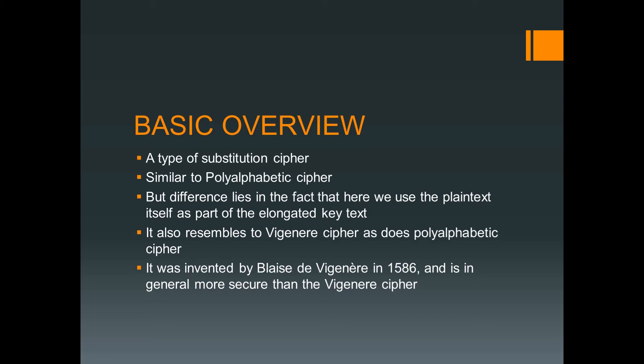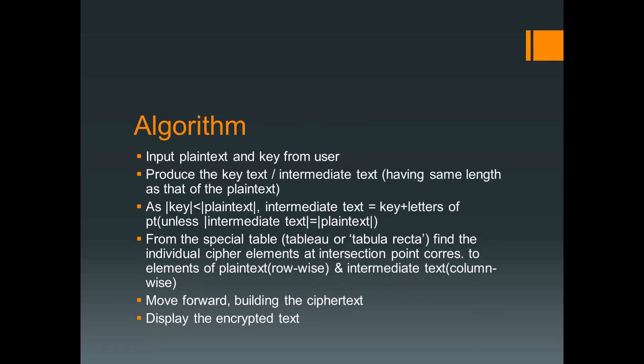Similar to the polyalphabetic cipher, in the case of the auto key cipher also, the length of the intermediate text will be equal to the length of the plain text — that is one very important similarity between the two ciphers. This auto key cipher also resembles the Vigenère cipher, as does the polyalphabetic cipher. This cipher was invented by Blaise de Vigenère in 1586 and is in general more secure than the Vigenère cipher.